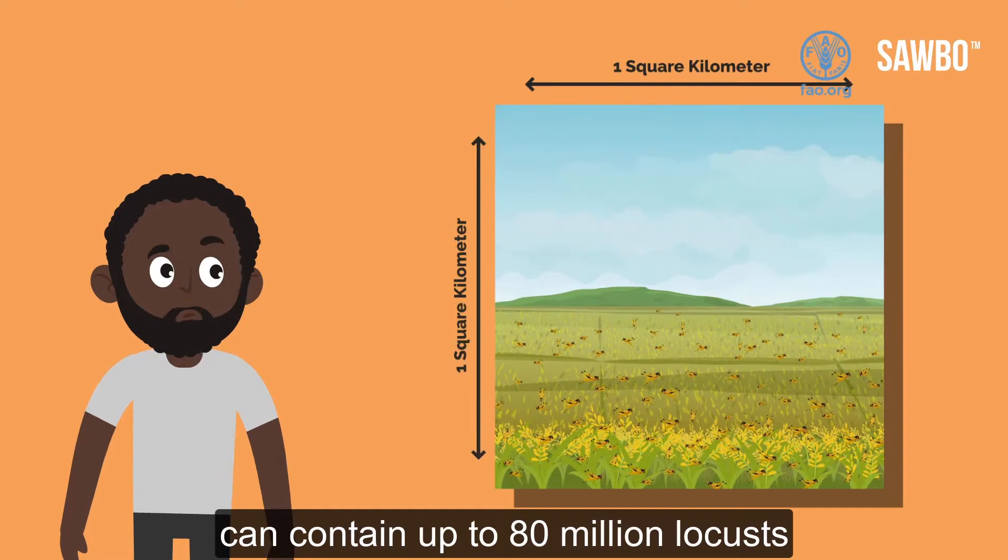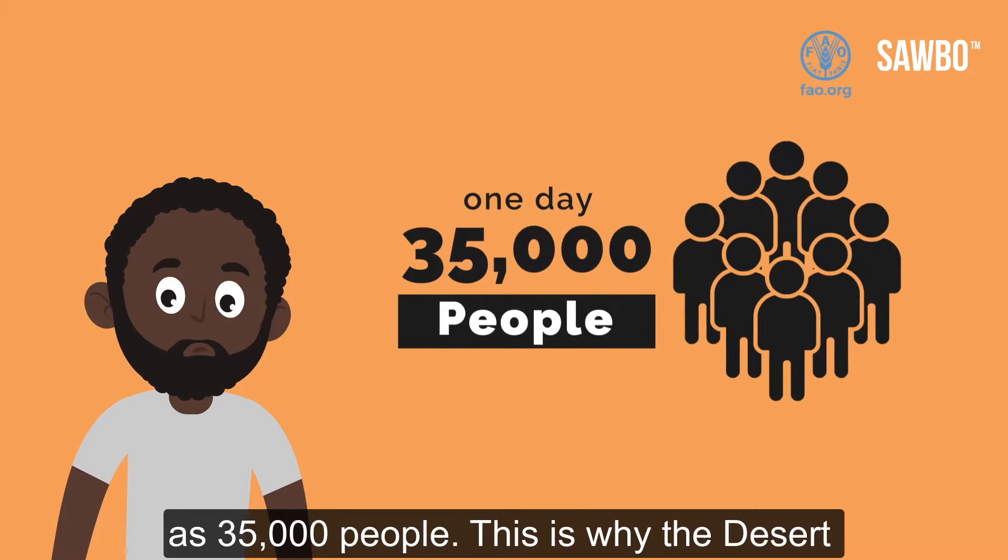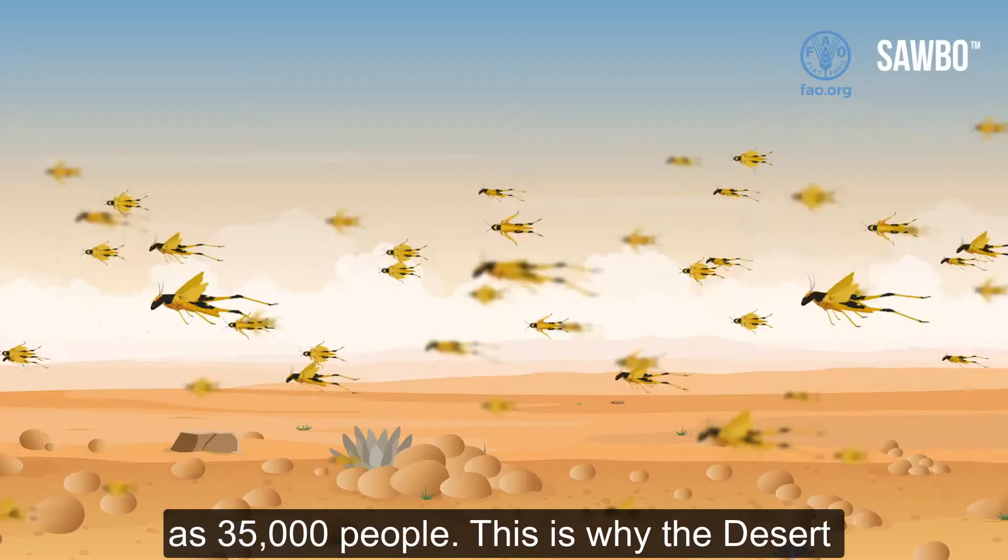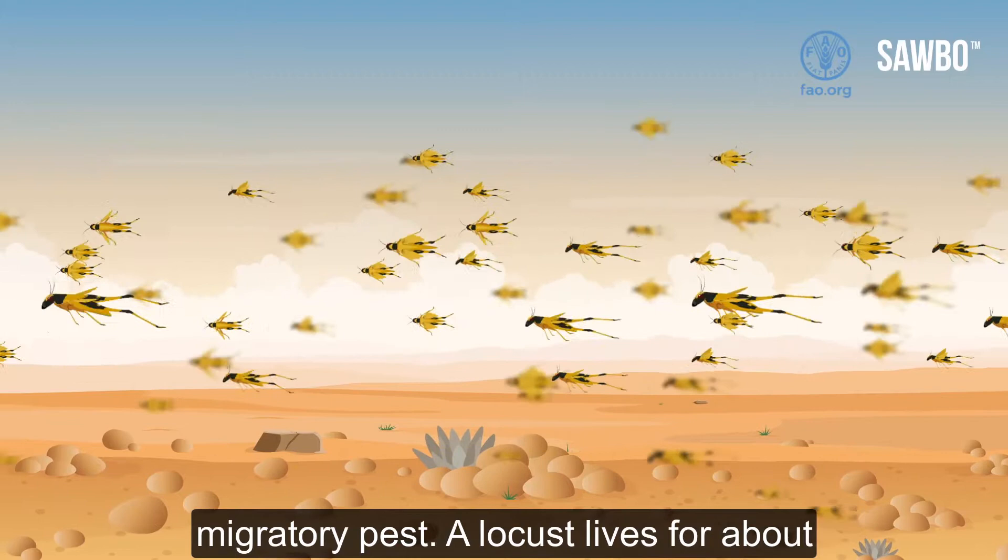A swarm of one square kilometer can contain up to 80 million locusts and eat the same amount of food in a day as 35,000 people. This is why the desert locust is the world's most dangerous migratory pest.